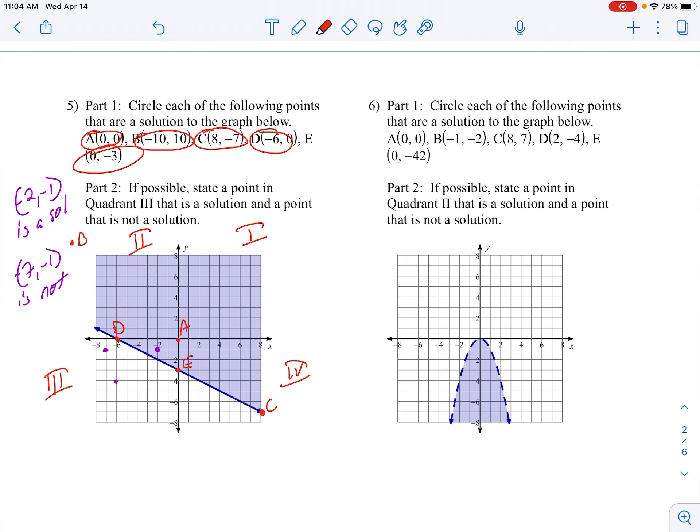All right, number six, which of these are going to be a solution. A is not because it is on the boundary line. It is dashed, so A is not. B is at negative 1, negative 2, which is right there. It is clearly in my shaded region, so B is a solution.